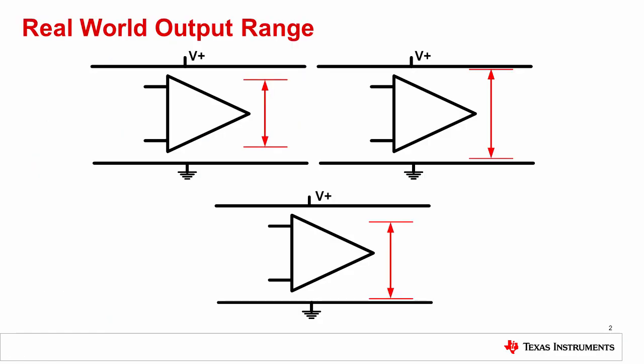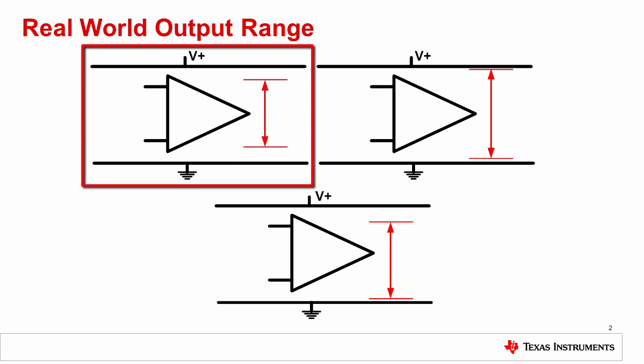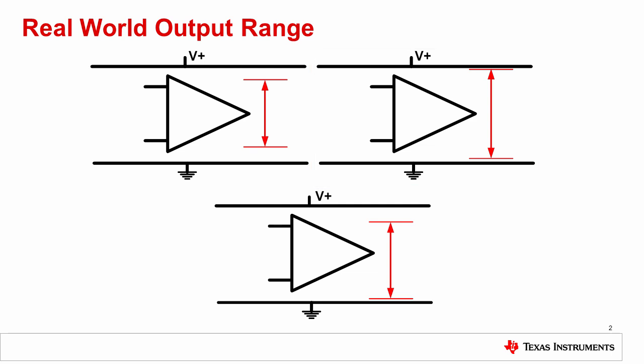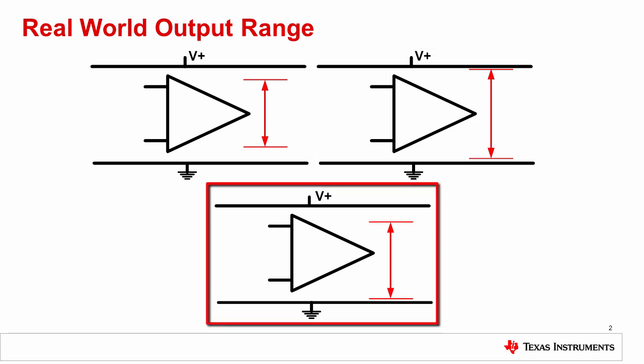Output swing limitations on op amps are defined relative to the power supply voltages. This figure shows three common output swing scenarios. The first case illustrates an output which cannot swing very close to either power supply rail, and in some instances this limitation can be more than a volt away from the supply. The second case shows a rail-to-rail output, where the swing can range from a few millivolts to hundreds of millivolts. The last case describes an amplifier with good swing near ground but limited swing near the positive rail, sometimes called a single supply amplifier.